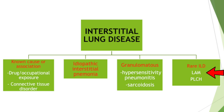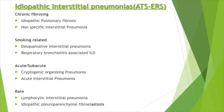The fourth group is the rare ILDs, like lymphangiomyomatosis and pulmonary Langerhans cell histiocytosis. The idiopathic interstitial pneumonias are again subdivided into four groups by the American Thoracic Society and the European Respiratory Society. This classification was first done in 2002 and then revised in 2013.